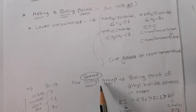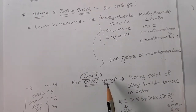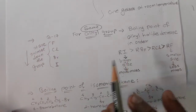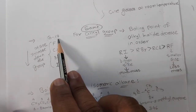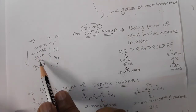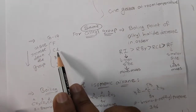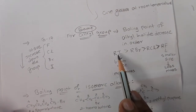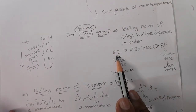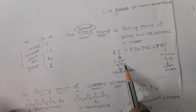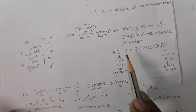For the same alkyl group, the boiling point of alkyl halides decreases in the order: alkyl iodide > alkyl bromide > alkyl chloride > alkyl fluoride. The reason is that in group 17 elements — fluorine, chlorine, bromine, iodine — atomic size increases down the group, and as atomic size increases, mass also increases. So alkyl iodide has the highest boiling point because iodine is the biggest and most massive atom.